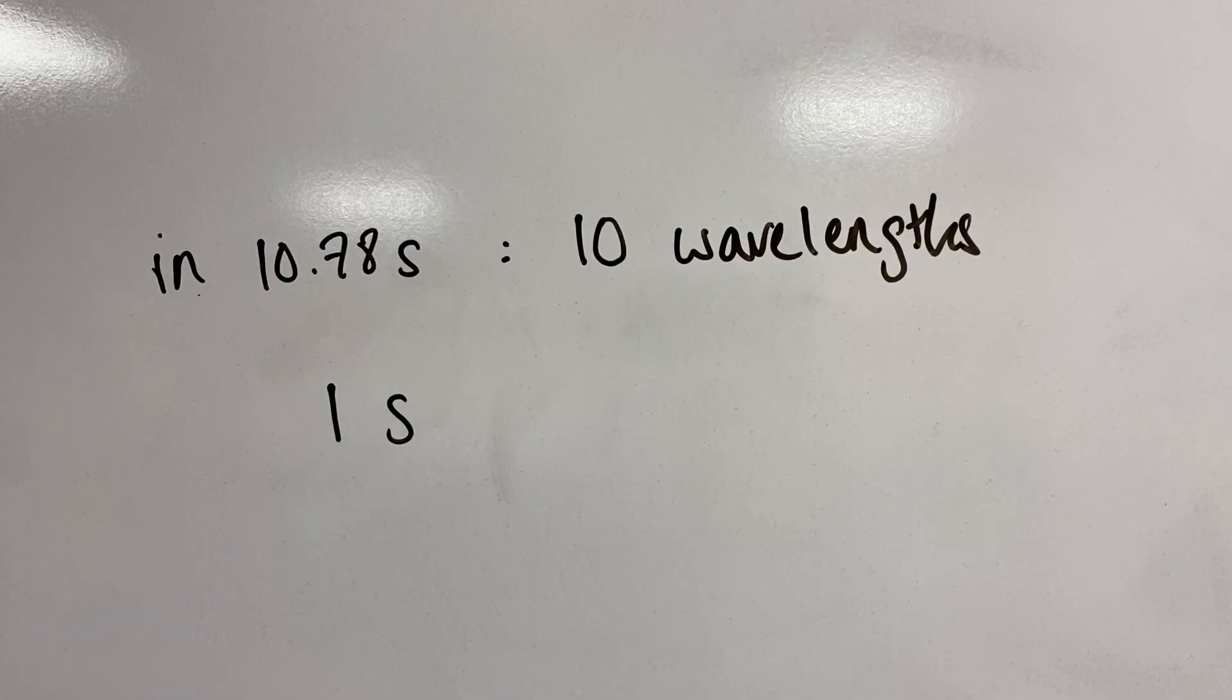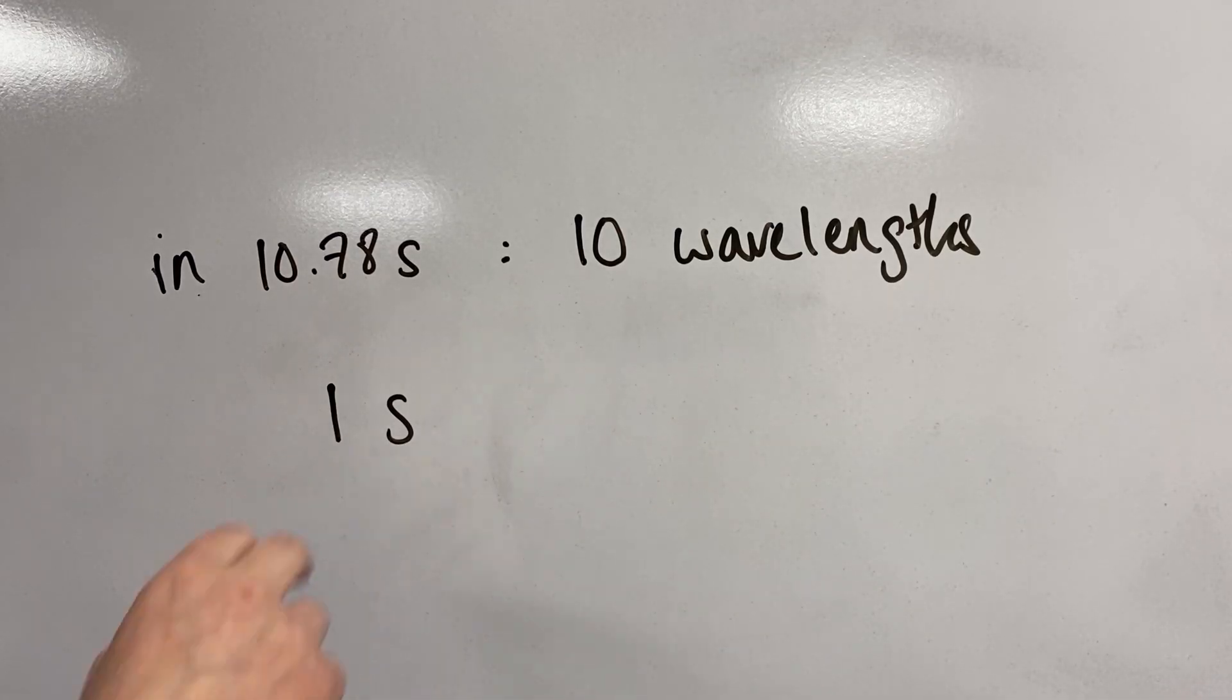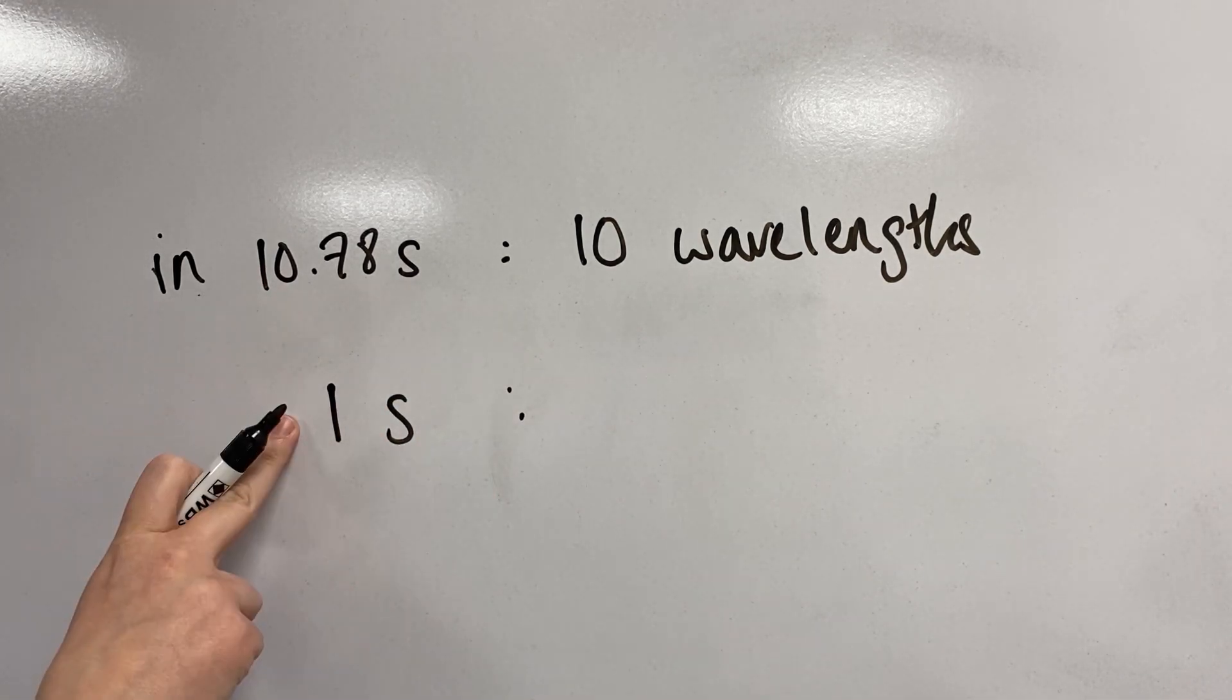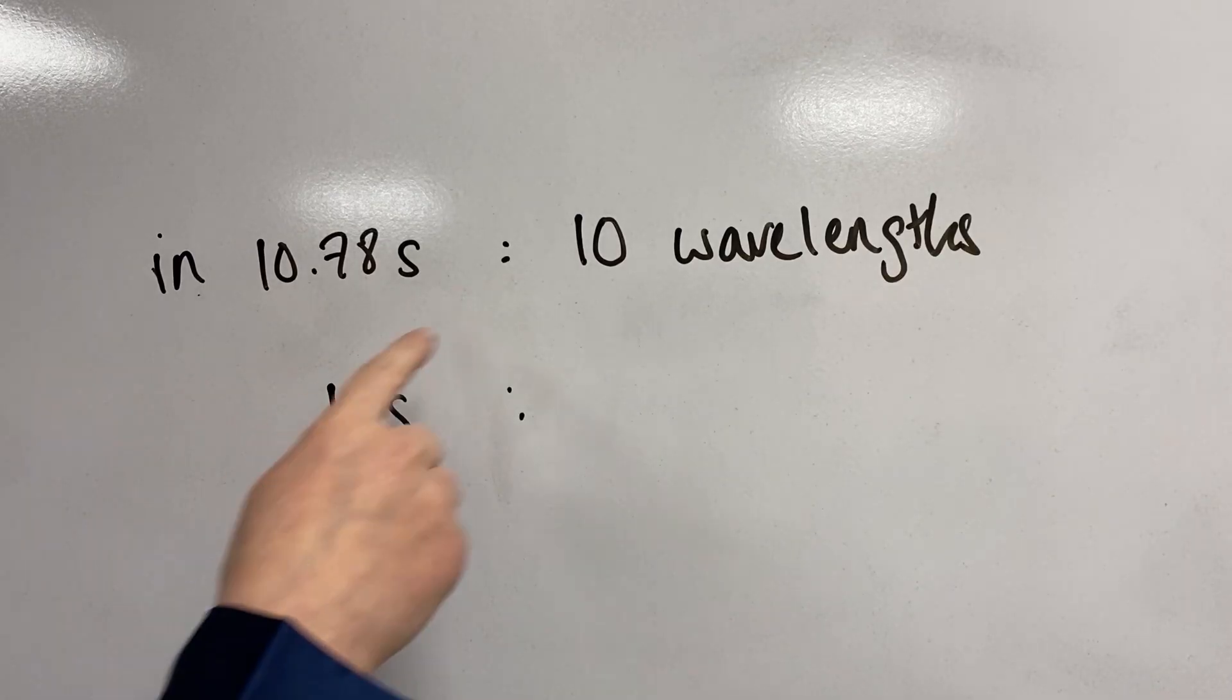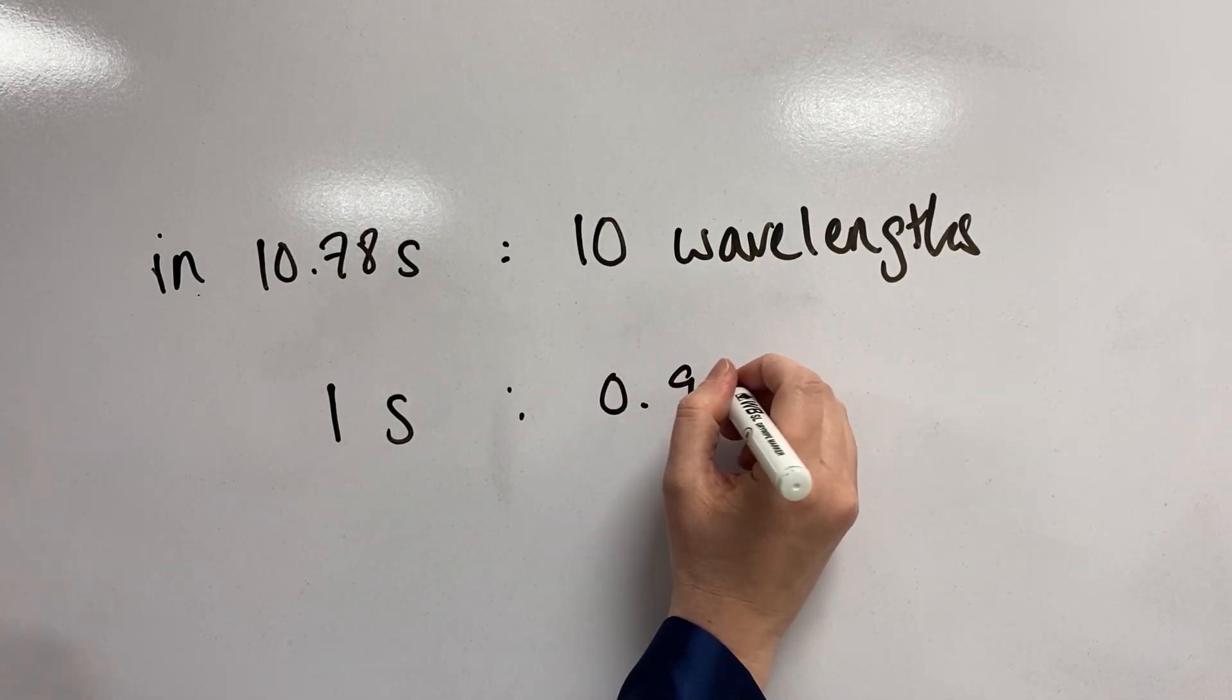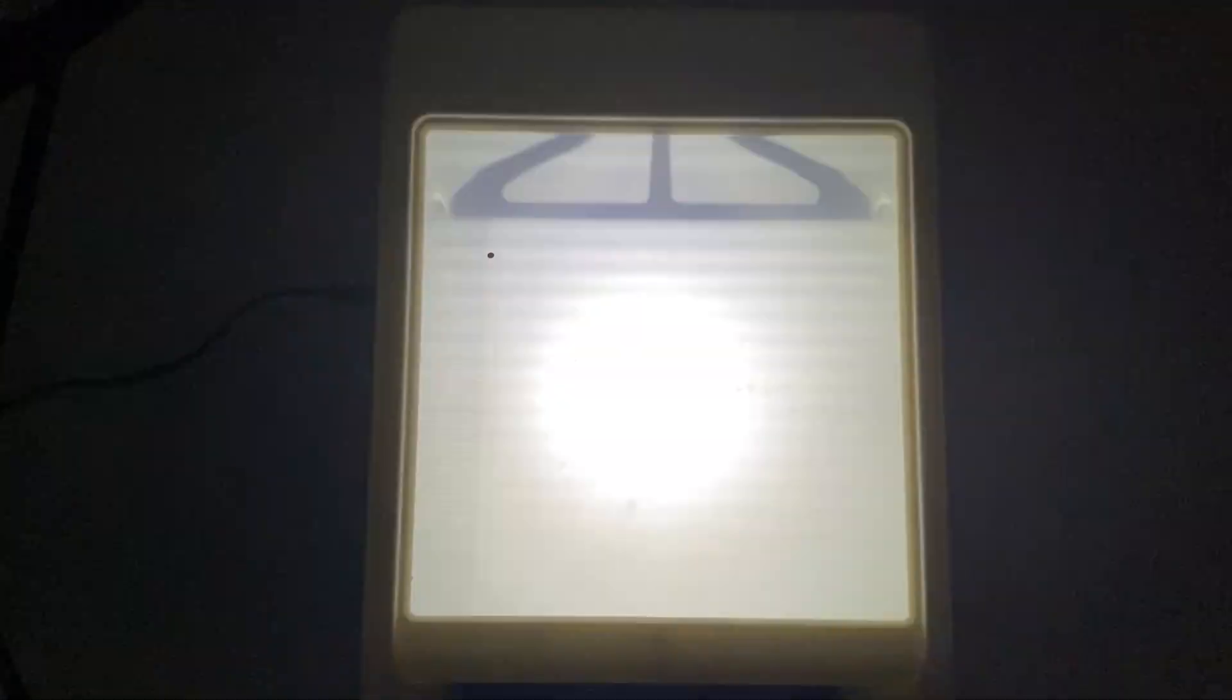So with our stopwatch we timed that in 10.78 seconds we travelled through 10 wavelengths. So how many wavelengths do we get through in one second? Remember that's the definition of frequency. So to get from here to here we have to divide by 10.78, so we have to do exactly the same on that side. So if we do 10 divided by 10.78 we get 0.928 and that is in hertz and that is our measured frequency. And if we sense check that value for frequency against what we see on the screen, we can see that it does take about a second for consecutive dark bands to pass that point that I've marked with the marker.